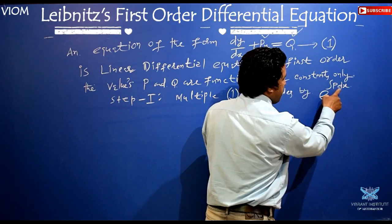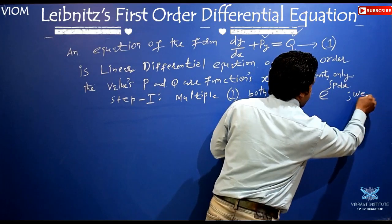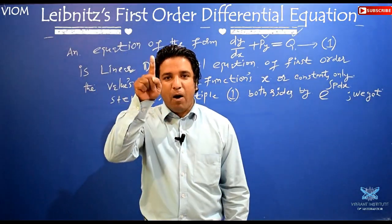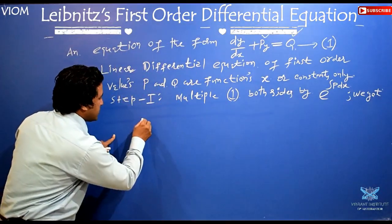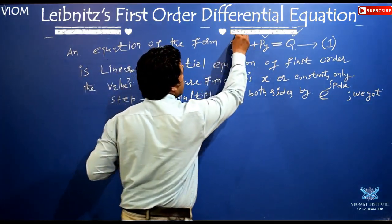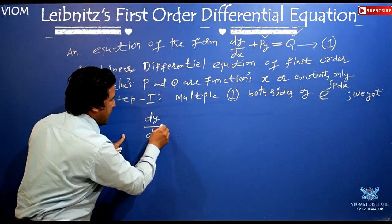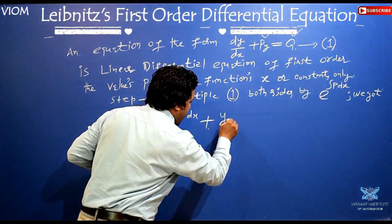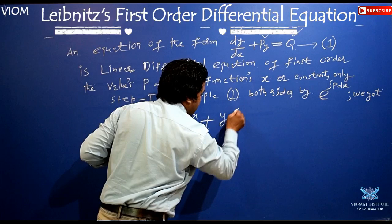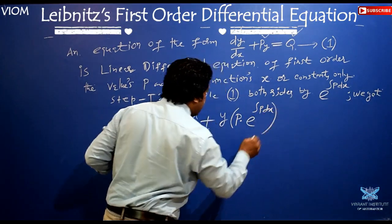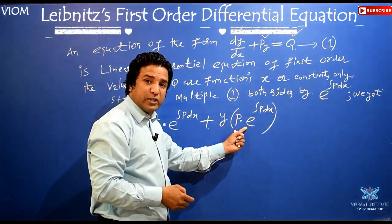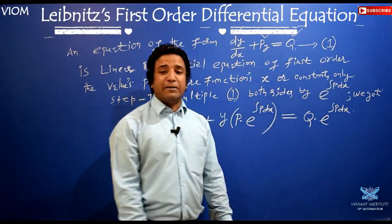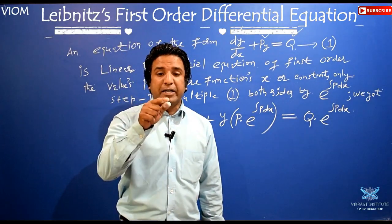This is the exponential function e raised to the power of the integral of P dx. We multiply both sides by this concept. Let us see what happens to this differential equation when we multiply by e raised to the power of integral of P dx. The first term becomes e^∫Pdx · dy/dx, and the second term p·y is multiplied by e^∫Pdx. The right-hand side becomes Q times e raised to the power of integral of P dx.